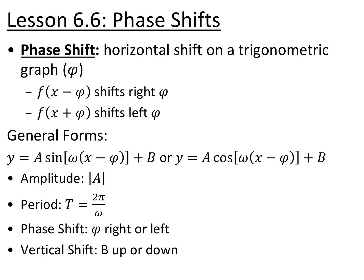Lesson 6.6 is phase shifts. Phase shifts are horizontal shifts on trigonometric functions, represented by the Greek letter φ (phi). Just like other transformations, if we subtract from x, we shift right, and if we add to x, we shift left. The general forms are y = A sin[ω(x - φ)] + B or y = A cos[ω(x - φ)] + B, where |A| is the amplitude, the period is 2π/ω, φ is the phase shift (right or left), and B is the vertical shift (up or down).